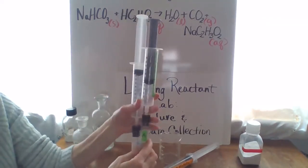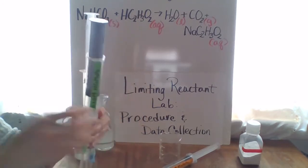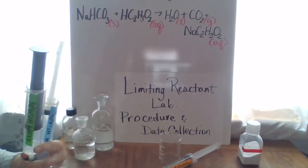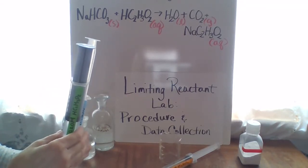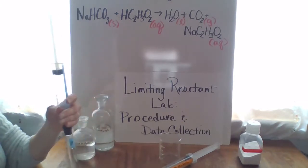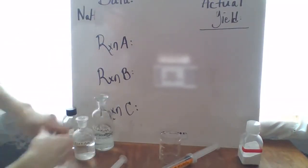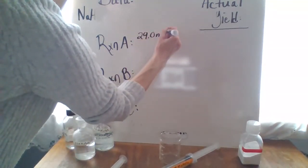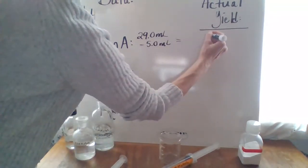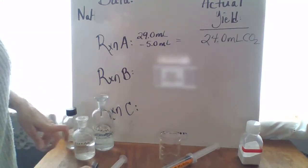All right. So let's start with reaction A to get our data. So we put in five mils. So we're going to subtract five mils from our values and take a look at where the stopper is. Looks like we have 29.0 milliliters. And we're going to subtract the 5.0 milliliters of the acetic acid that we put into the system. So that gives us an actual yield of 24.0 milliliters of CO2. So that's the actual yield of CO2 for that particular reaction.